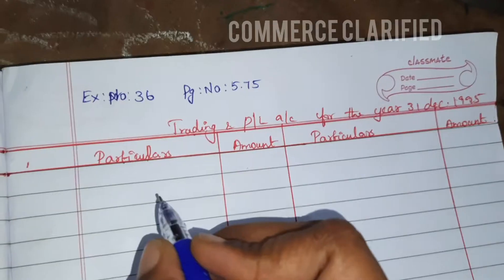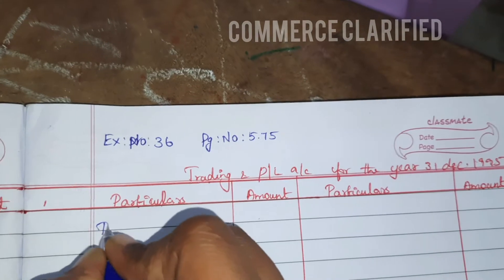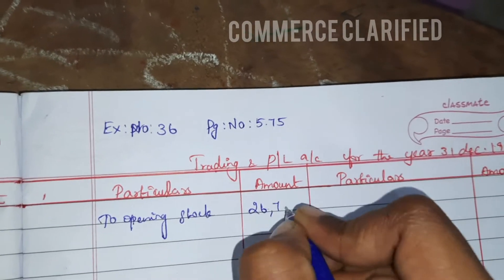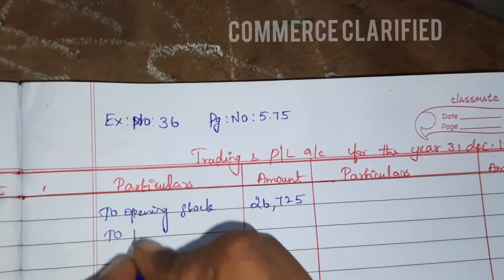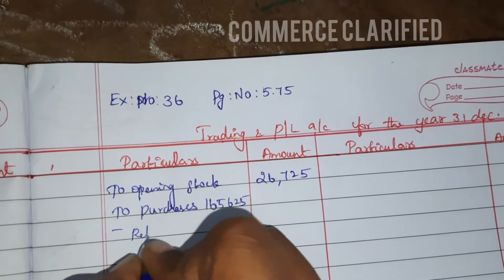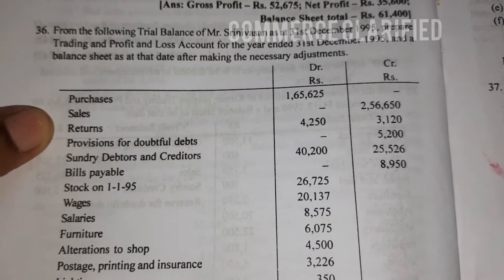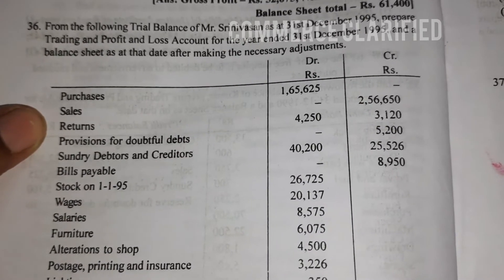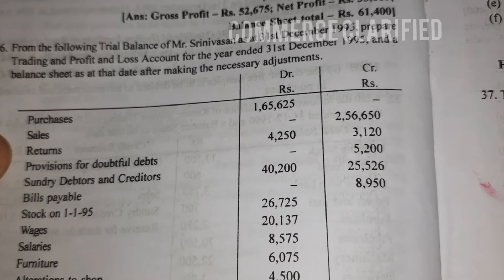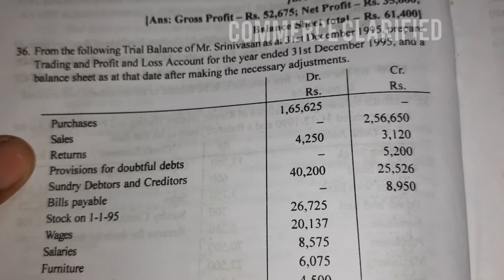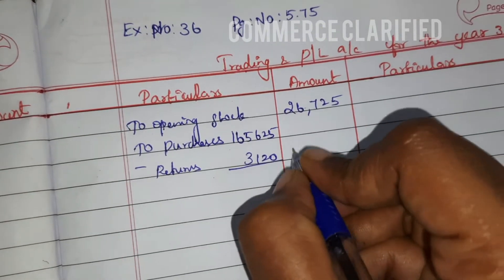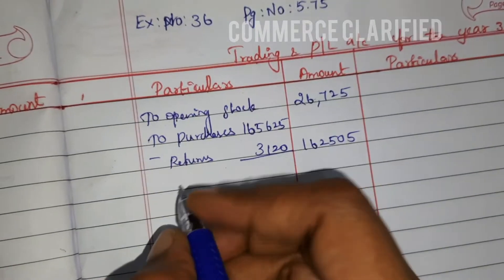Now for the trading account: opening stock from the trial balance is 26,725. Purchases are 1,65,625 minus purchase returns of 3,120, giving an outer column figure of 1,62,505. Sales returns are 4,250 and purchase returns are 3,120 on the credit side.